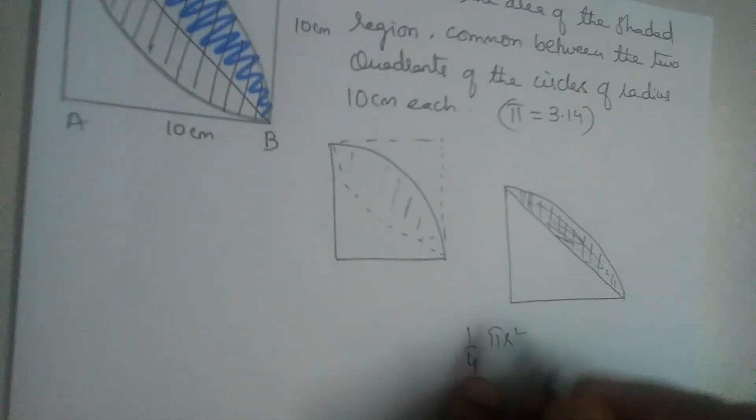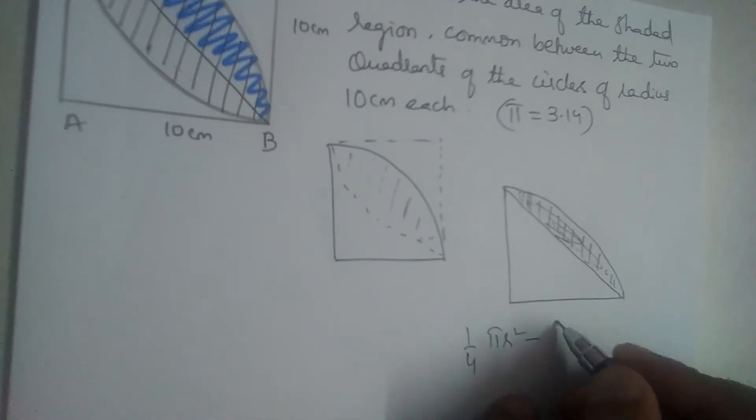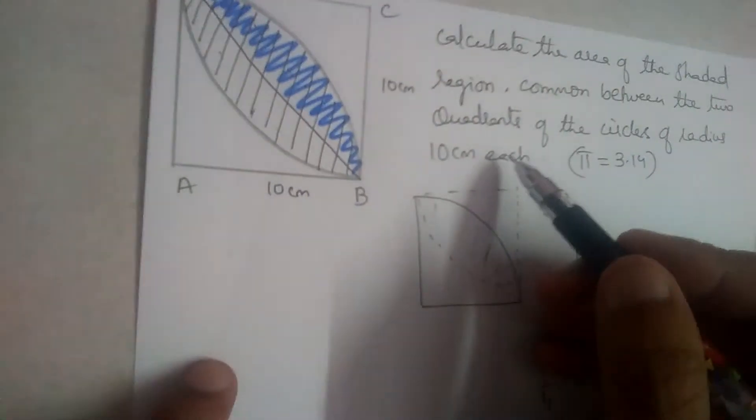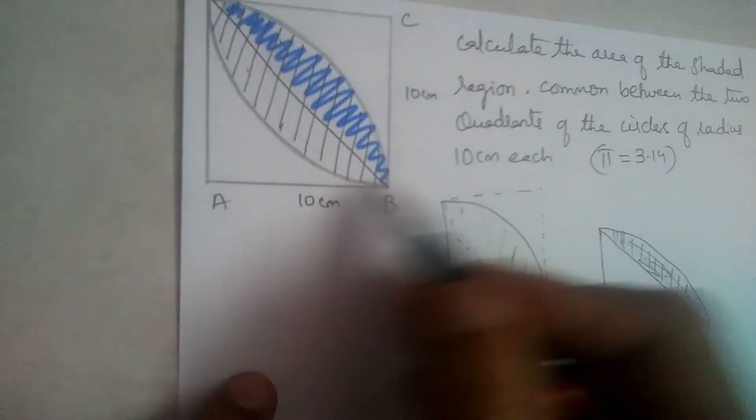One fourth of the circle, area of one fourth of the circle minus area of triangle, half into base into height. So one by four, pi is 3.14, and what is the radius of the circle? Given radius 10 centimeters.